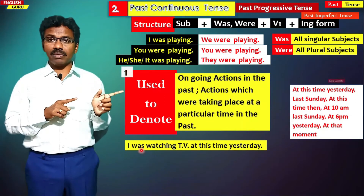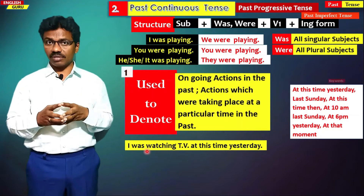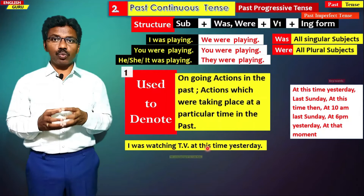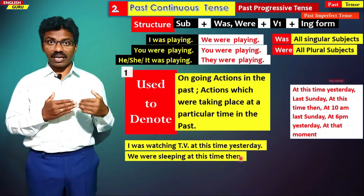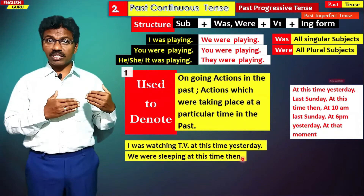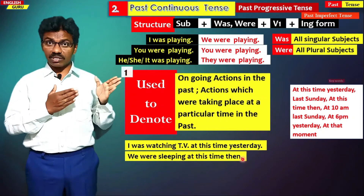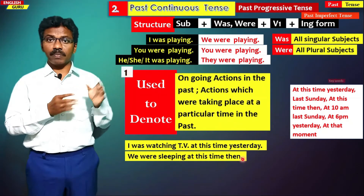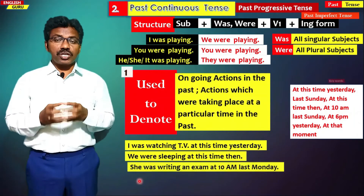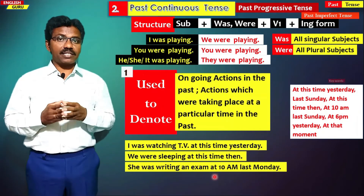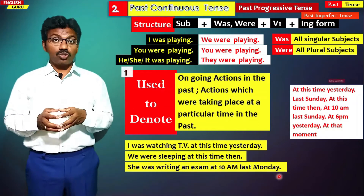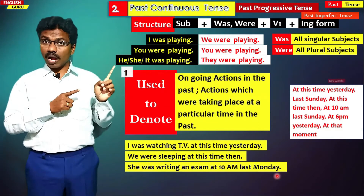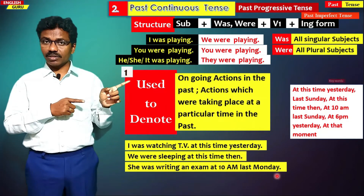I was watching TV at this time yesterday — today you are talking about yesterday's activity; at that time yesterday you were watching TV, not right now. Similarly, we were sleeping at this time then — not now, that was a past activity continuing at that time. She was writing an exam at 10 a.m. last Monday — she was continuing at that time but now she is not.